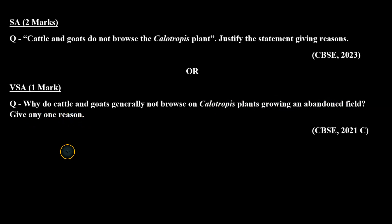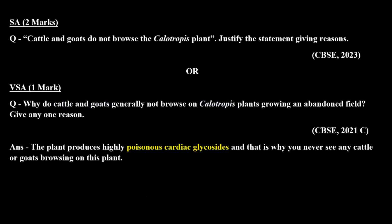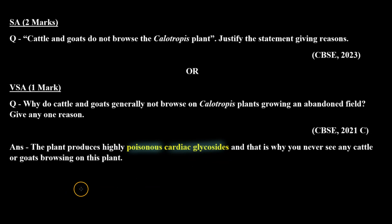The key point in this question is that cattle and goats do not feed on Calotropis plants. Let's check the answer. This happens because Calotropis is a highly poisonous substance — it produces cardiac glycosides, which if consumed by any living organism can be fatal.